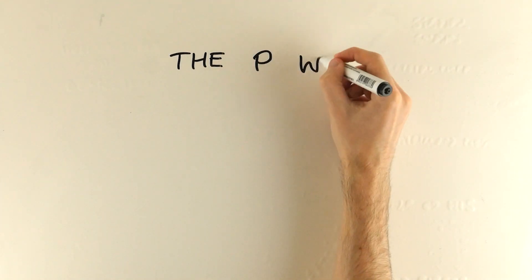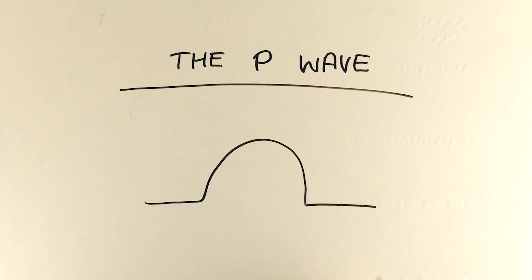The first bump is a P wave. This occurs when the left and right atria of the heart are full of blood, and the sinoatrial node fires off. Both of our atria then depolarize, contract and pump blood into the ventricles. Normally this should be less than 100 milliseconds long.